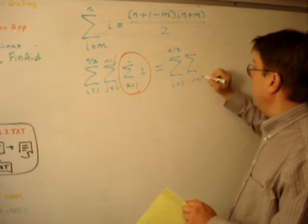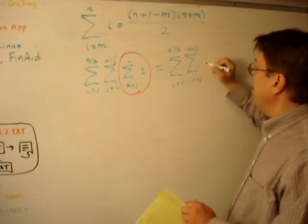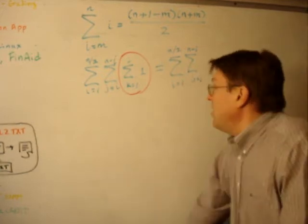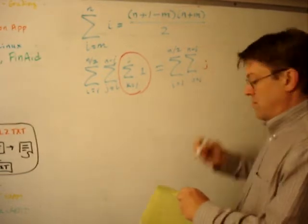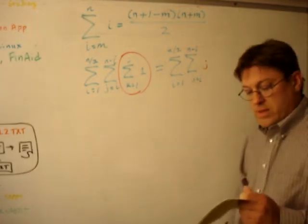So j equals i to n minus i of, this whole thing is just j. So that's not too bad.